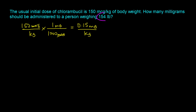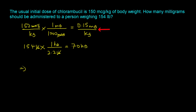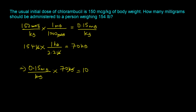The 154 pounds needs to be converted to kilograms using the conversion factor 2.2 pounds equals 1 kilogram. The pounds cancel out, giving 70 kilograms. Multiply the normalized dose of 0.15 mg/kg by the patient's weight of 70 kg — the kilograms cancel out — and you get 10.5 milligrams of Chlorambucil.